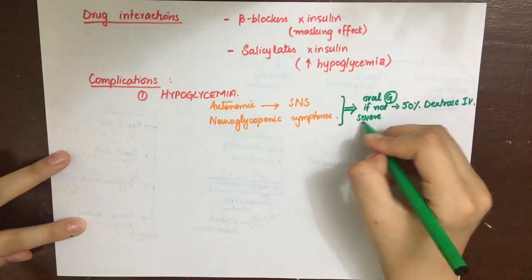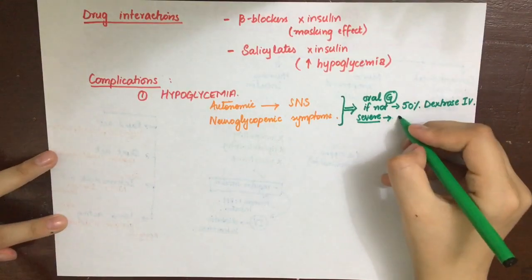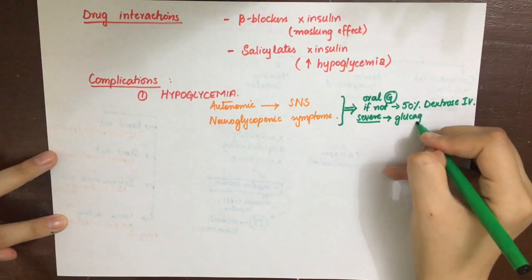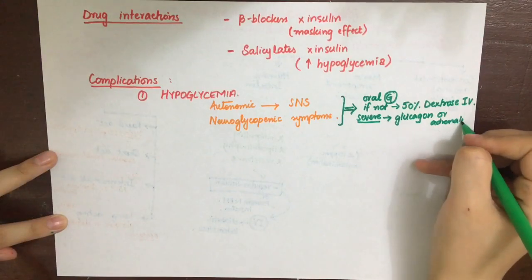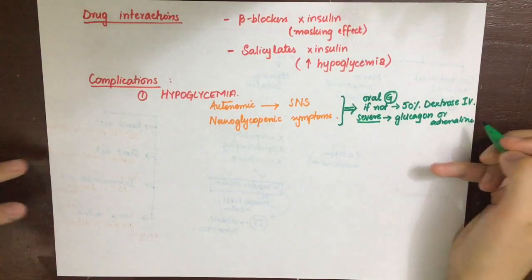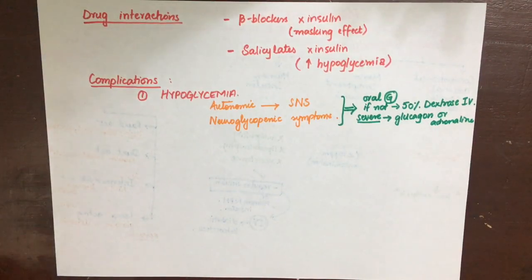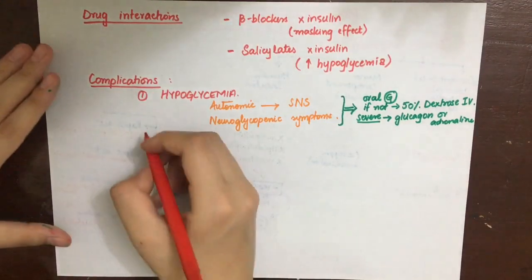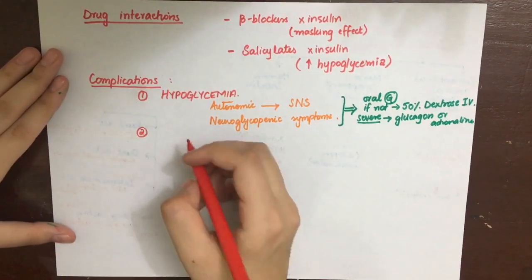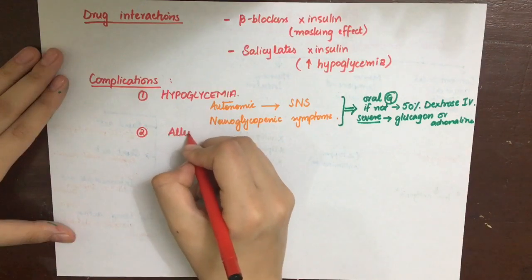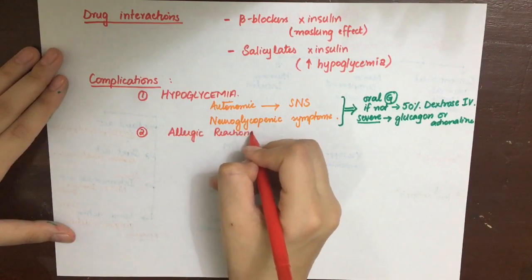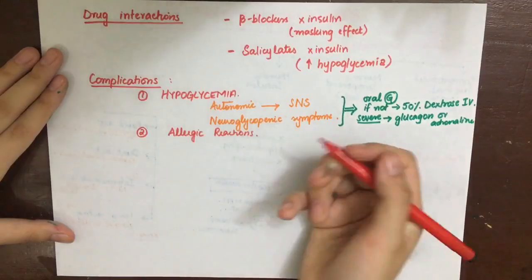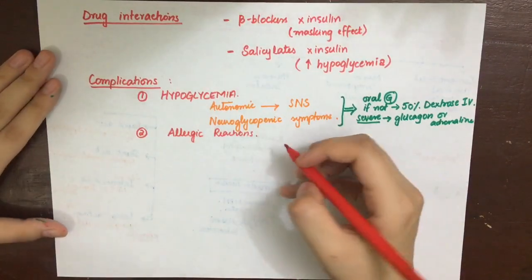Hypoglycemia can be treated simply by giving glucose. If the patient is conscious, give oral glucose. If the patient is not conscious, give 50% dextrose IV. If hypoglycemia is very severe, we can give glucagon or adrenaline. If the patient is a chronic alcoholic, thiamine must be given with glucose, because failing to do so will result in Wernicke's-Korsakoff syndrome.